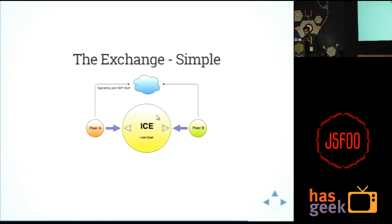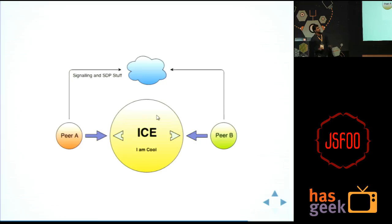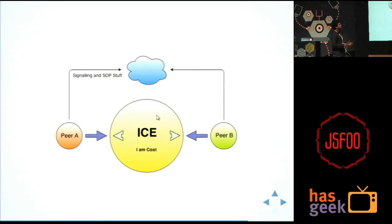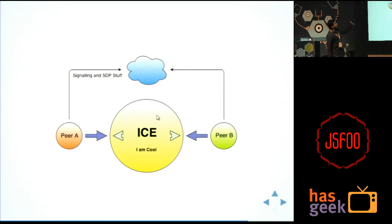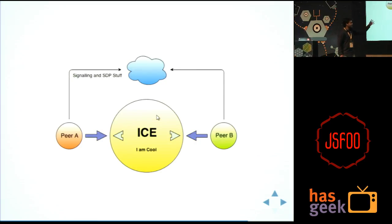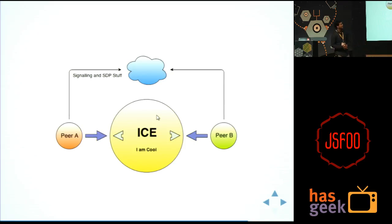Here is a simple diagram I tried to create. Peer A does all the signaling and stuff via an HTTP server. Then, once it is established, peer A and peer B communicate using ICE. So ICE is a framework that is to be looked upon.